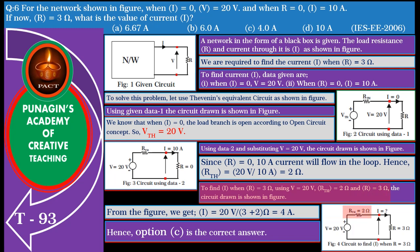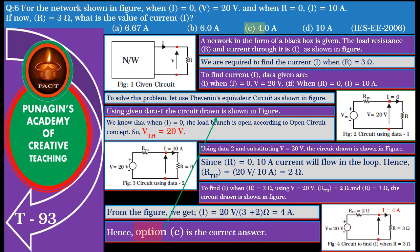using V equals 20 volts, RT equals 2 ohm and R equals 3 ohm, the circuit drawn is shown in the figure. From the figure, we get I equals 20 volts divided by (3 plus 2) ohm, and hence we get I equals 4 amperes. Hence, option C is the correct answer.